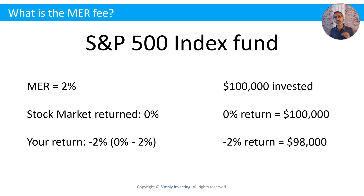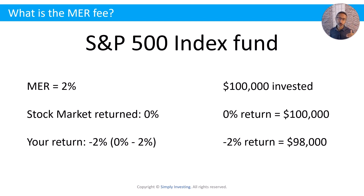You can see what's happening: the fund company gets paid every single year — whether you make money or you lose money, the fund deducts their fee. When the market has a positive return, you make a little bit less because of the fee. When the market breaks even, you lose money because of the fee. And if the market has a negative return, you lose a little bit more because of the fee. Either way, the company gets paid.